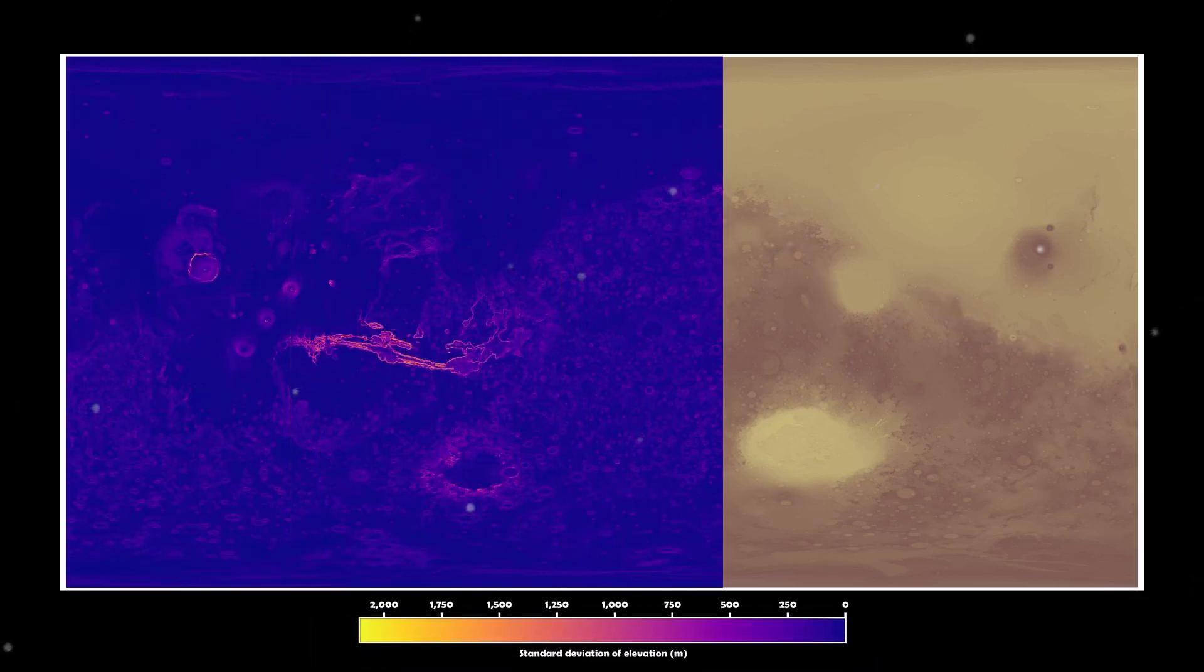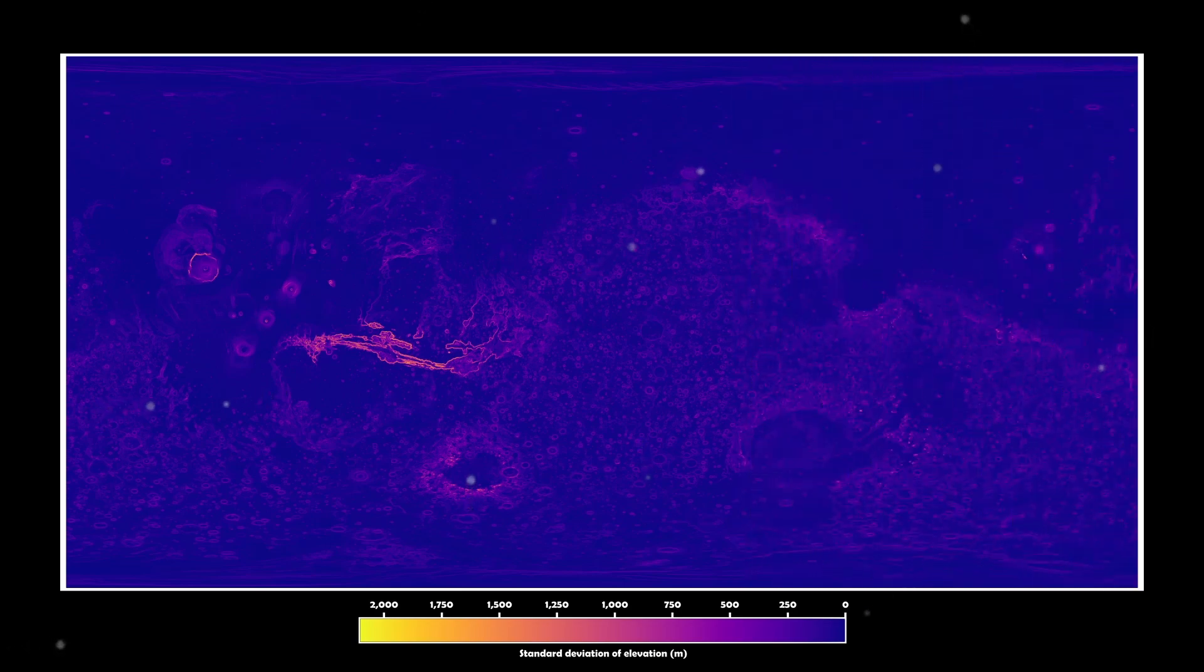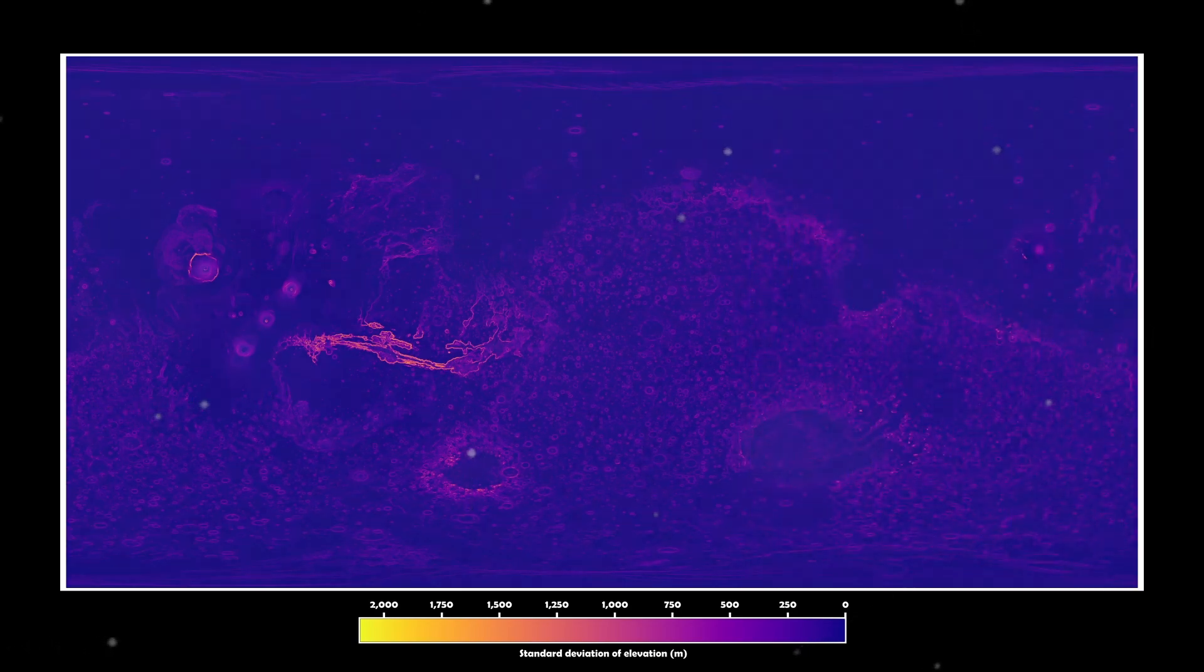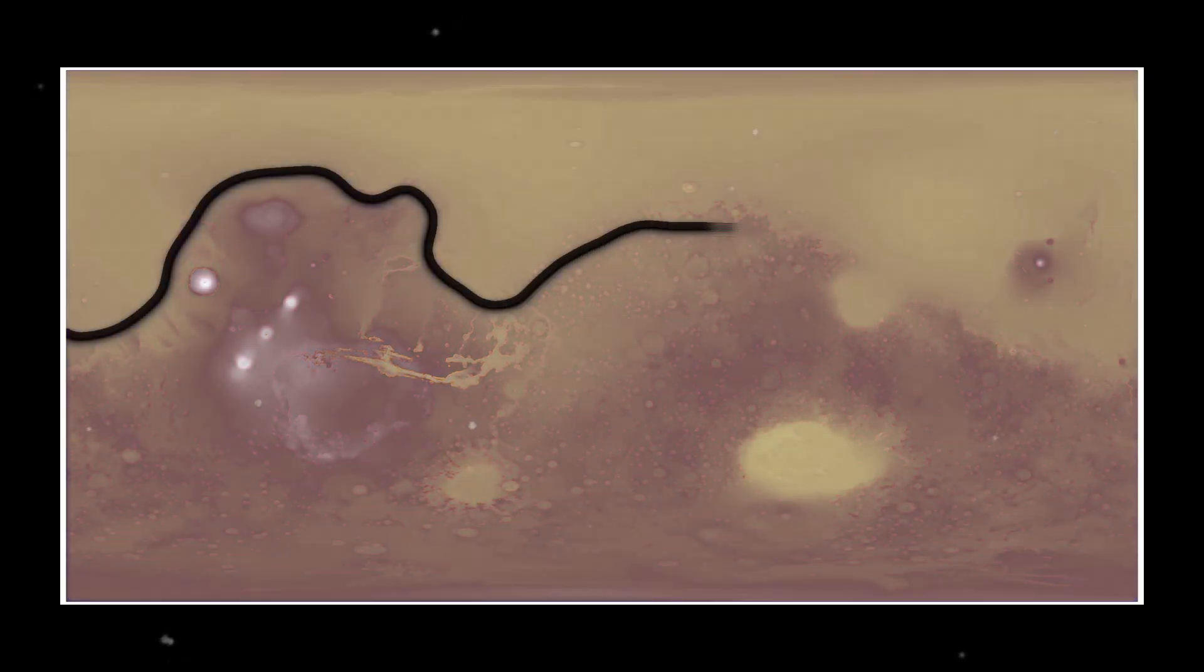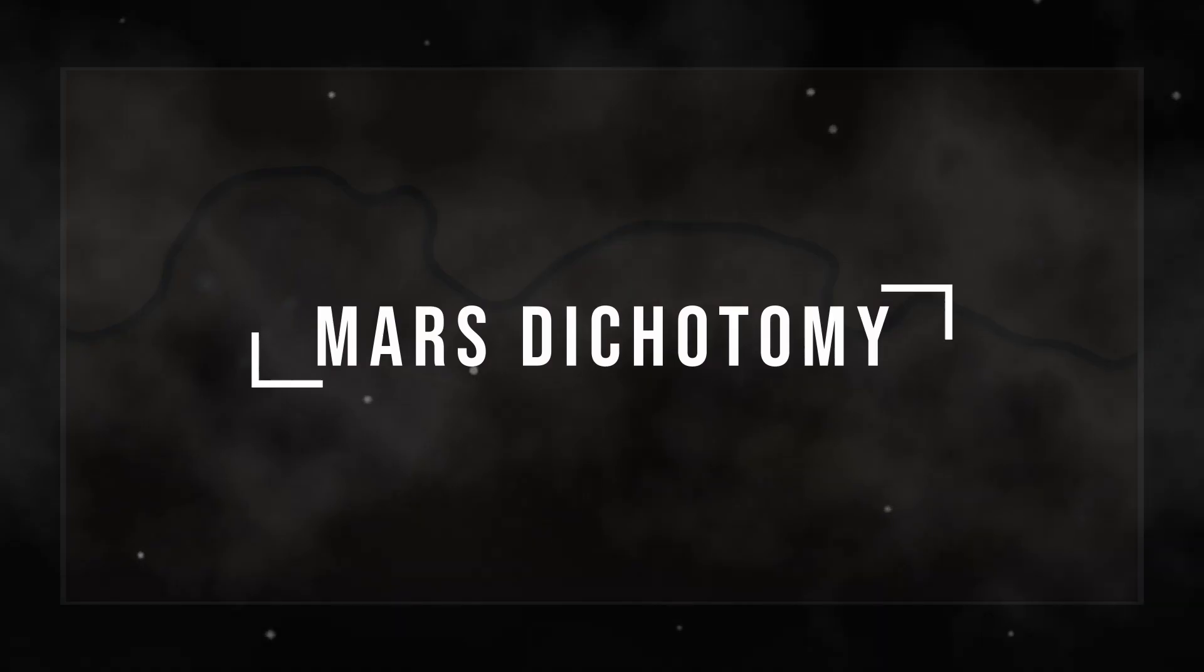We can see this clearly in this smoothness map, which measures local deviations in altitudes. This extreme contrast between the two hemispheres is what's known as the Mars dichotomy.